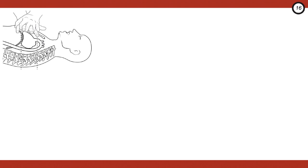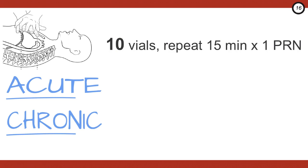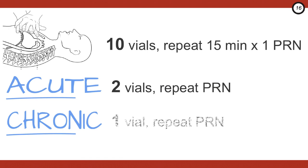For the dosing of digifab, there are three scenarios we have to consider: the pulseless patient, the acutely poisoned patient, and the chronic poisoning. For the pulseless patient, we want to give 10 vials and then repeat in 15 minutes if needed. For the acute patient, you want to give two vials and then repeat PRN. And finally, for the chronic patient, you want to give one vial and then repeat PRN.